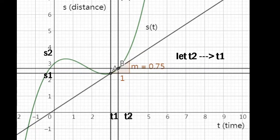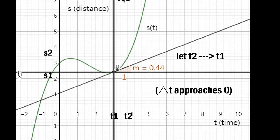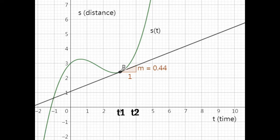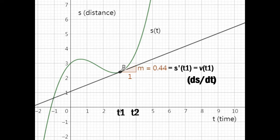Then, move t2 closer and closer to t1, and you'll find s2 getting closer to s1. Therefore, the change in position delta s and the change in time delta t would approach zero. And this line will approach the tangent line of s of t at t equals t1. This is the main idea of the derivative, and is super useful in motion physics. The slope is now precisely the derivative of s of t at t1, which can be represented as s prime of t1, or ds over dt, and it is the instantaneous velocity at t1. Finally, we can conclude that velocity can be solved by taking the derivative of the position function.